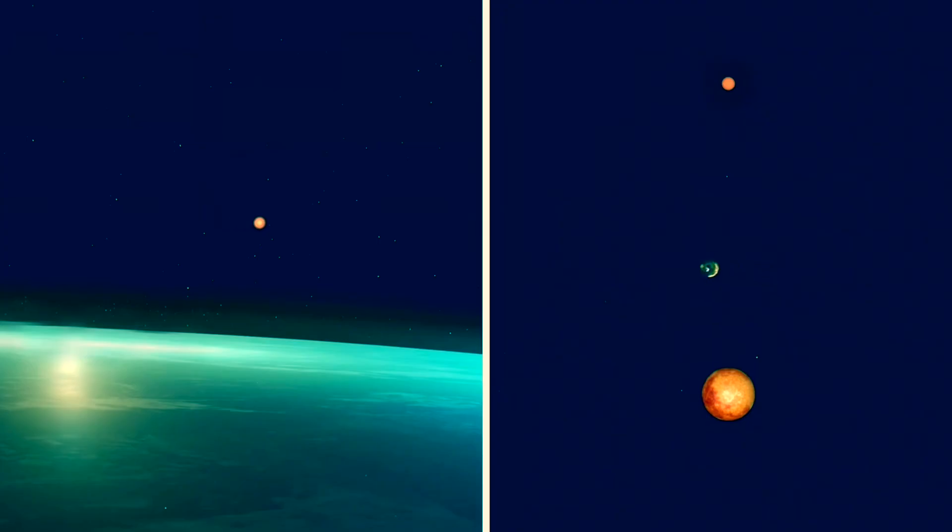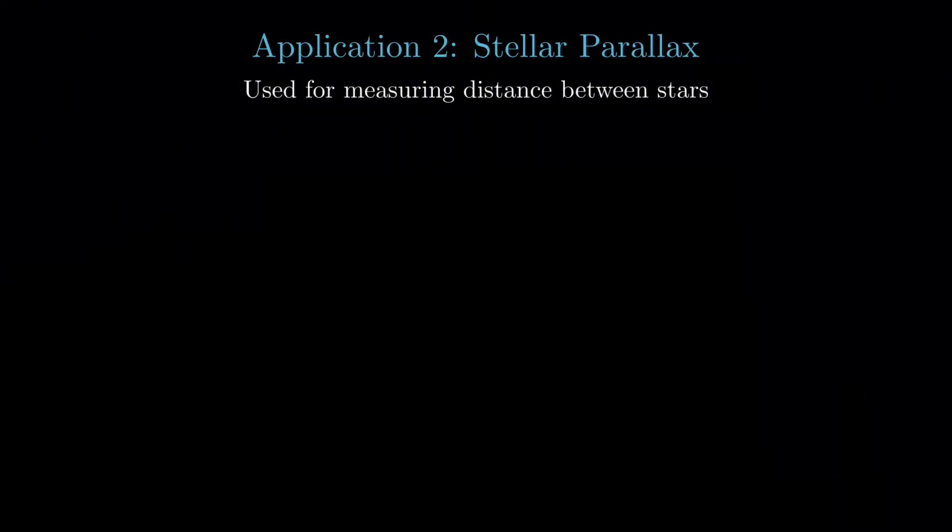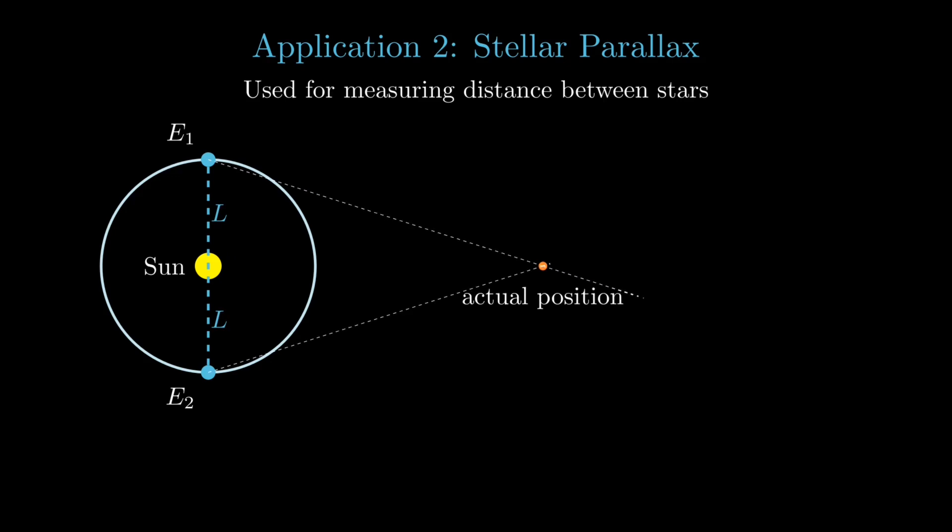Let's look at another important application, stellar parallax. Astronomers use this method to measure the distance to nearby stars. It works by observing the apparent shift in a star's position against distance background stars as Earth moves from one side of its orbit around the Sun to the other, typically six months apart. Because stars are extremely far away, these observed shifts, or parallax angles, are incredibly small, often fractions of an arc second. This makes stellar parallax a perfect scenario for applying the small angle approximation.